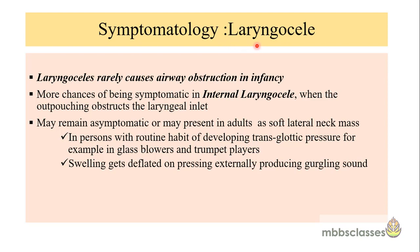The laryngocele causes only intermittent symptoms, whereas laryngeal saccular cyst causes constant symptoms. Laryngoceles rarely cause airway obstruction in infancy, and if symptomatic, the internal type is more likely to obstruct the laryngeal inlet. If they do not present in infancy they may remain asymptomatic, or in adults they present as a soft lateral neck mass. In adults, this is most commonly seen in persons with a habit of developing transglottic pressure, for example glass blowers or trumpet players. When this neck mass is pressed externally it gets deflated and produces a gurgling sound.